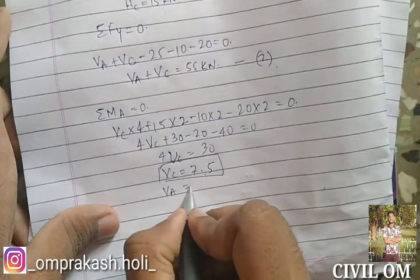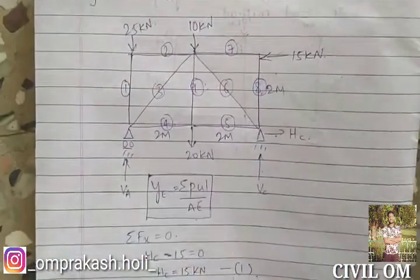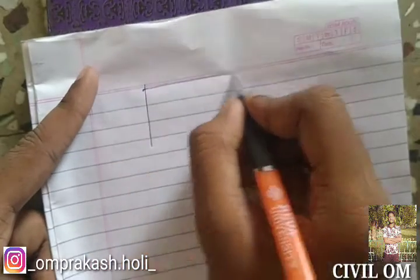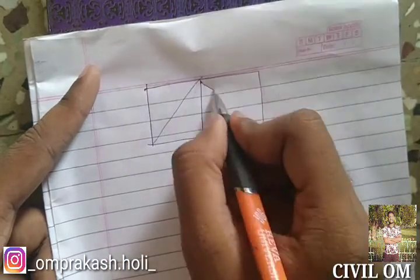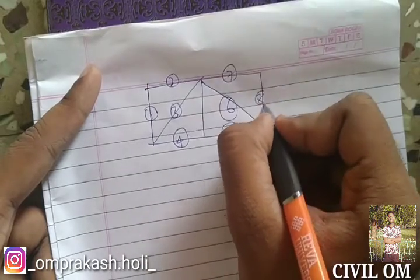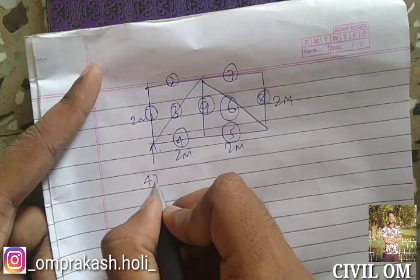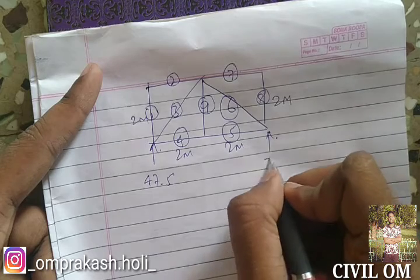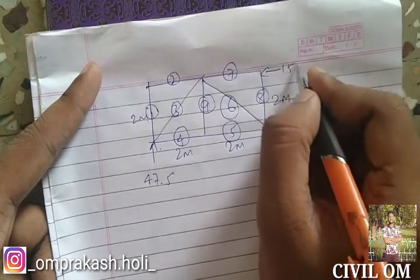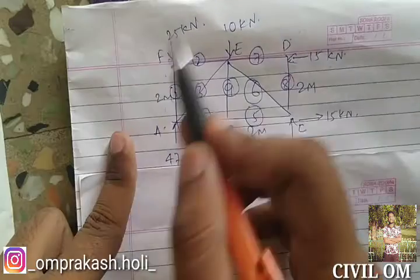Solving the equation, VC equals 7.5 kilonewton. Substituting into equation 2, VA equals 47.5 kilonewton. Now let us redraw the diagram systematically with all the members labeled 1 through 9, each side 2 meters. We place VA equals 47.5 kN, VC equals 7.5 kN, HC equals 15 kN, the 10 kN and 25 kN loads at their respective joints.